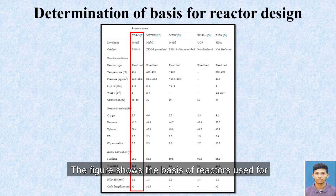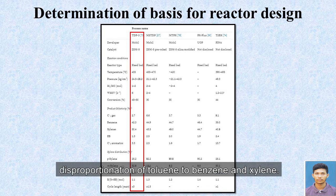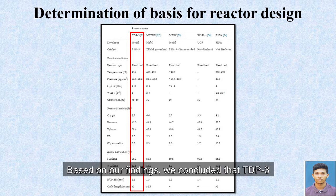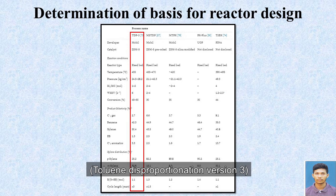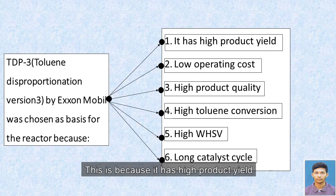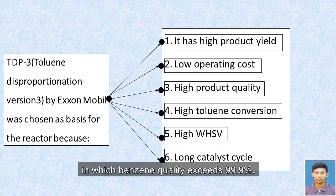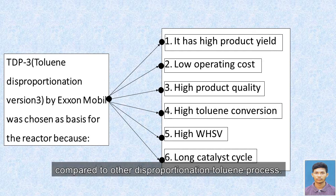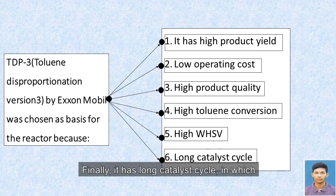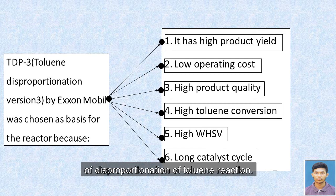The figure shows the basis of a reactor used for disproportionation of toluene to benzene and xylene. Based on our findings, we concluded that TDP3 — toluene disproportionation version 3 by ExxonMobil — is ideal to be chosen as our basis for the reactor. This is because it has high product yield, where the ratio of benzene to xylene is 1 to 1.1. Secondly, it has high product quality, in which benzene quality exceeds 99.9%. It also has high toluene conversion compared to other toluene disproportionation processes, and high weight hourly space velocity. Finally, it has a long catalyst cycle in which the cycle length exceeds 3 years with stable product yield, contributing to low operating cost.